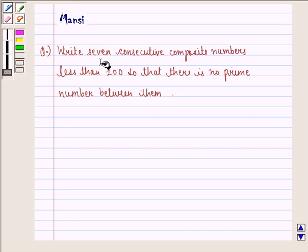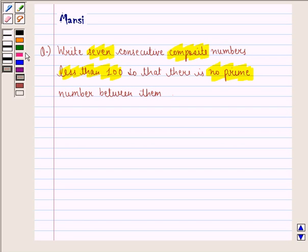In this question we have to find seven consecutive composite numbers less than 100 so that there is no prime number between them. Now let us start with a solution to this question.